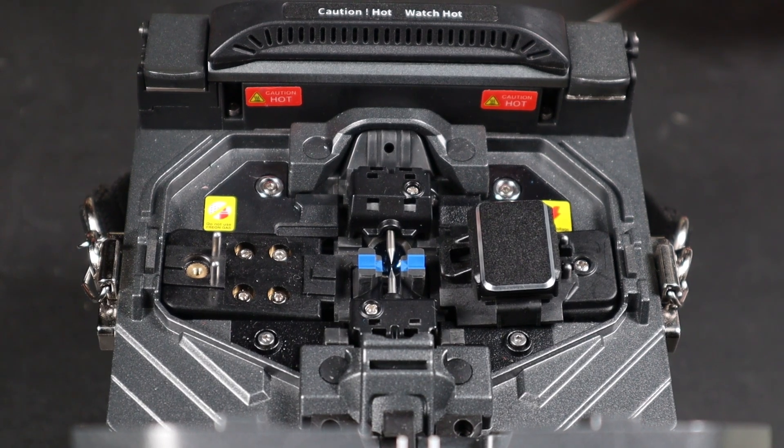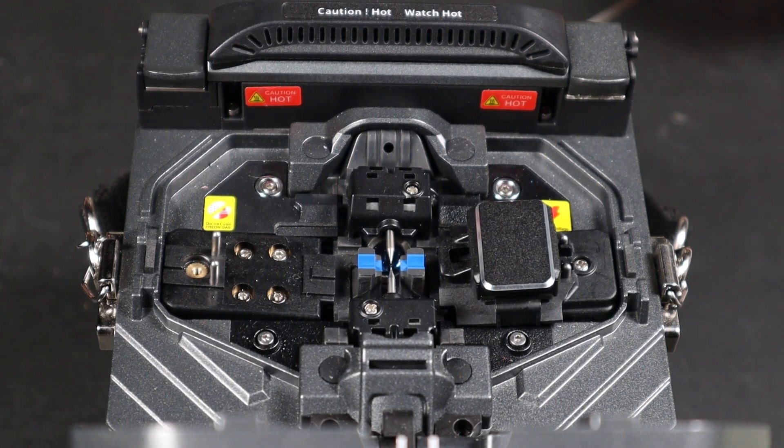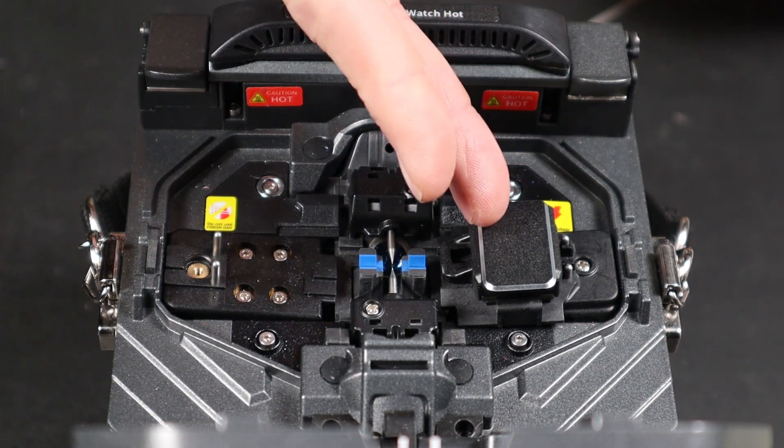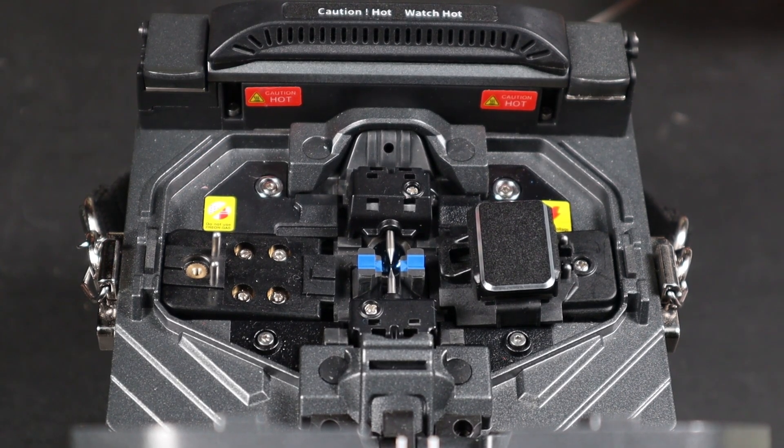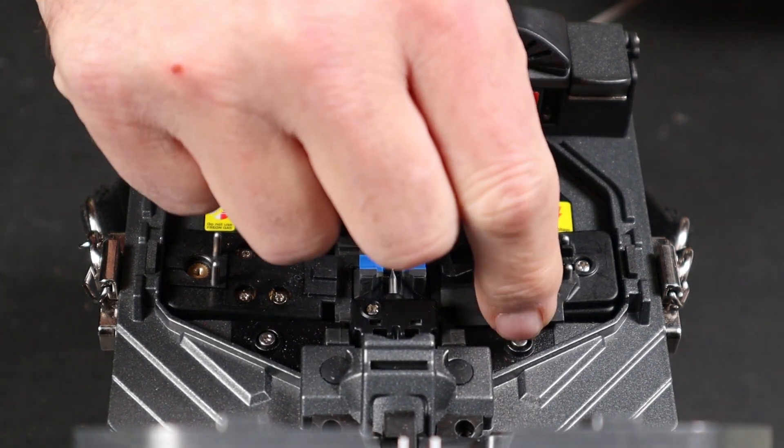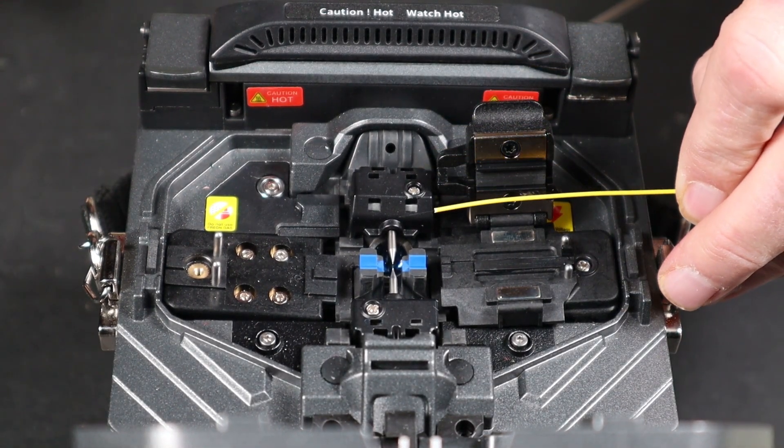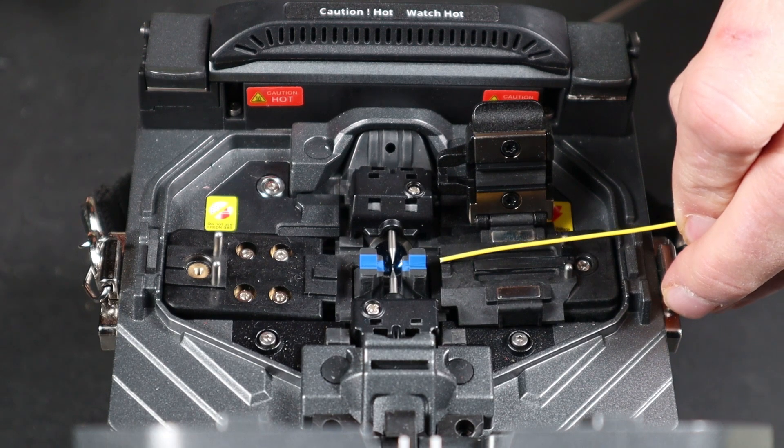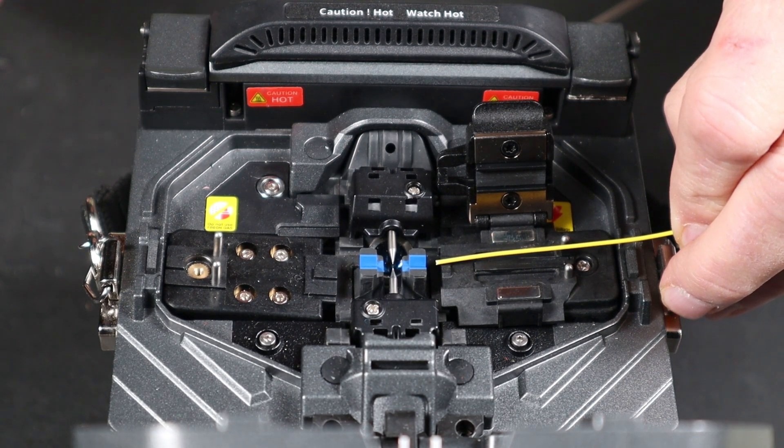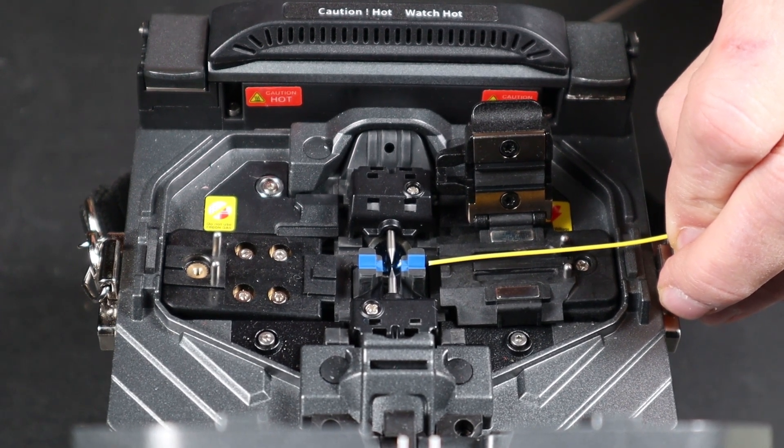Here, I will be demonstrating how to load the splicer using both the fixed and movable holders. When using the fixed holder, open the lid. Place the fiber in the V-Groove. And the face of the fiber should be between the end of the V-Groove and the tips of the electrodes.